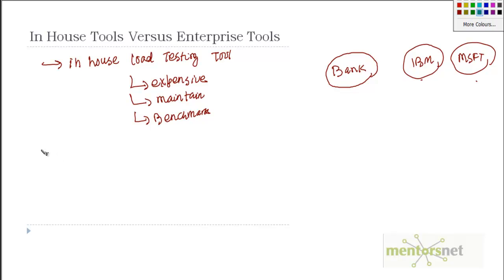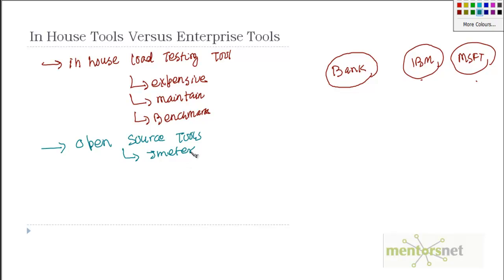Another option is looking for an open source version. There are quite a lot of open source tools available. One of the leading open source load testing tools is JMeter, backed by the Apache Foundation. It has a lot of good functionality that can be compared to an enterprise-grade load testing tool, and since the source code is available you can see exactly what is happening and also modify the tool itself. Another tool, not as popular, is called Grinder — also open source.